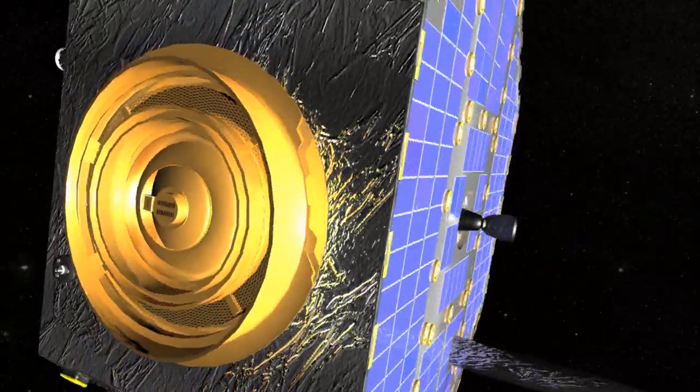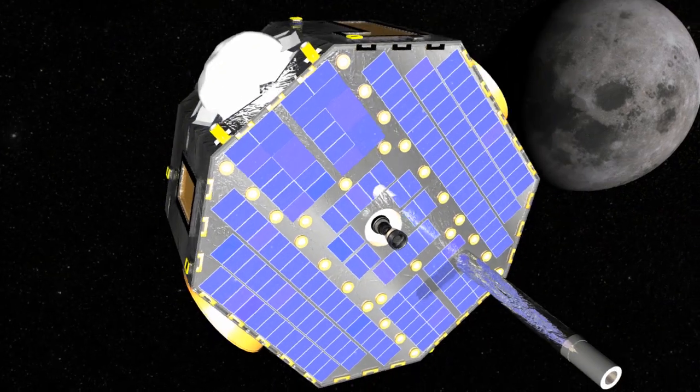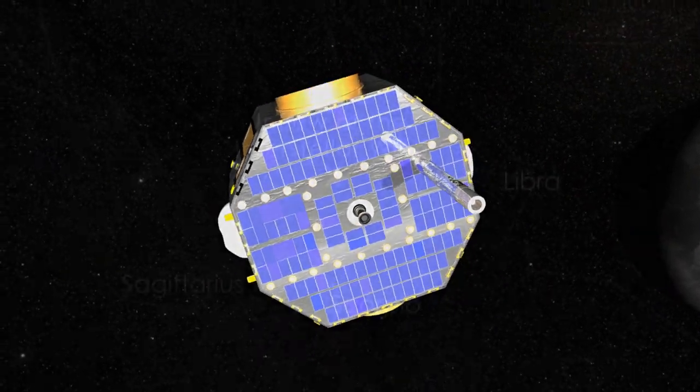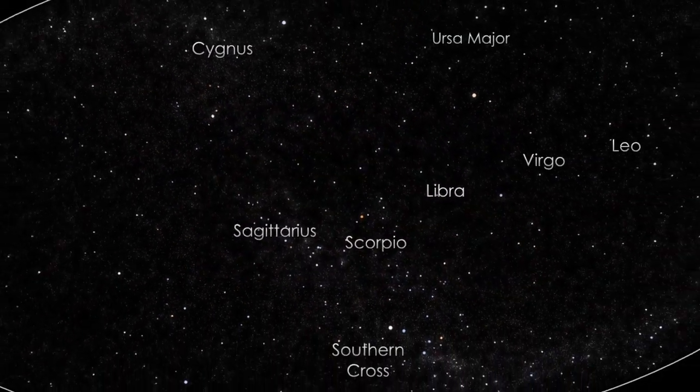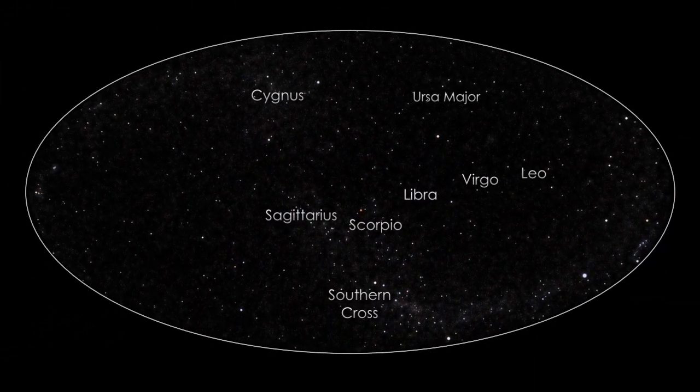IBEX, or the Interstellar Boundary Explorer, is designed to study this region from Earth orbit and has now made the first direct measurements of hydrogen, oxygen and neon from outside the solar system.